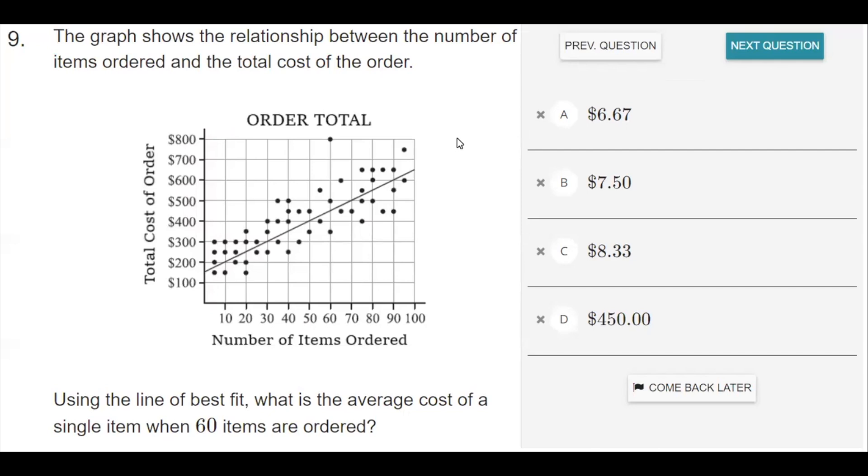The graph shows the relationship between the number of items ordered and the total cost of the order. Using the line of best fit, what is the average cost of a single item when 60 items are ordered?